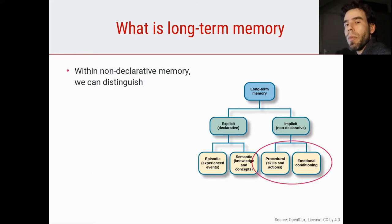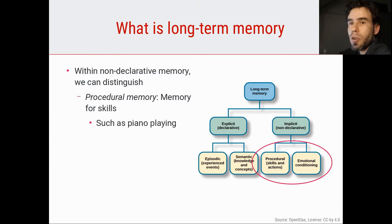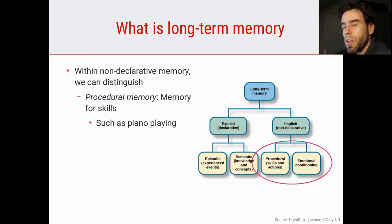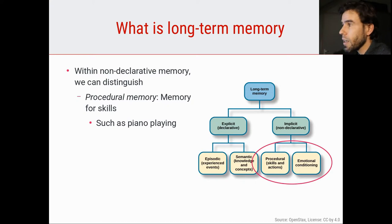Within non-declarative memory we can distinguish procedural memory, which is memory for skills — for example, piano playing or riding a bike. Those are skills you can do, but if you can do them, you do so implicitly. You've trained it, and at some point you're able to do it. You have no introspection into exactly how you are able to do it, which also makes it very tricky to teach to other people. That is procedural memory, or motor memory.